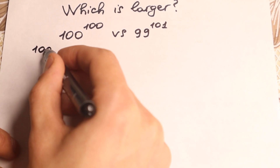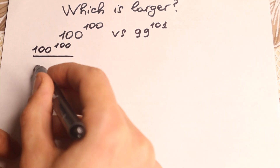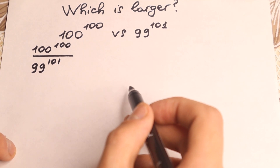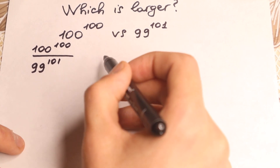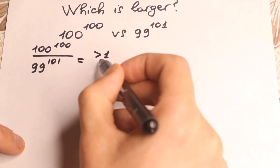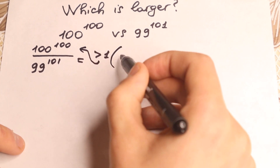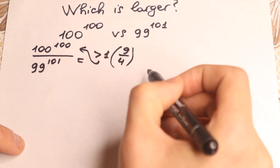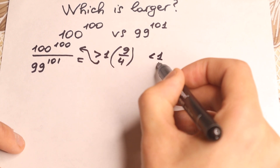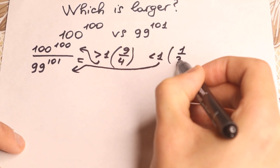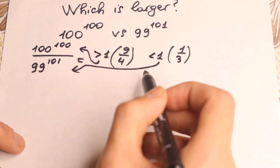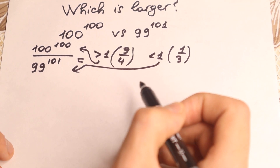I want to show you a really interesting approach. Let's divide our left hand side by our right hand side: 100 to the power 100 divided by 99 to the power 101. Whatever answer we get, we can easily tell which one is larger. For example, if the expression is greater than 1, then the numerator is greater — like 9 over 4 tells us 9 is greater than 4. And if the answer is less than 1, the denominator is greater — like 1 over 3. This is the math concept we need to solve this problem.